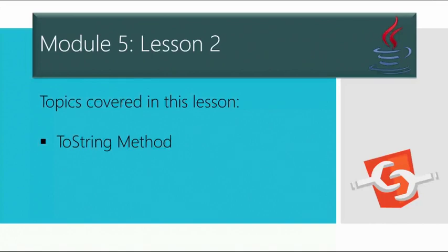That output can be the state of the object, and it depends on your own implementation. The main advantage of Java's toString method is that by overriding the toString method of the Object class, we can return values of the object, so we don't need to write much code. That's the main advantage of using the toString method. Let me go ahead and demonstrate this so it'll become easier for you to understand once you apply this technique.